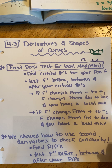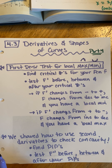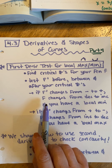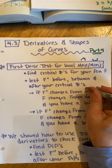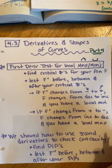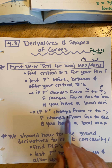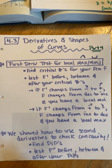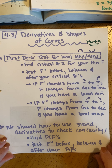We draw a number line and see how the derivative behaves before, between, and after our critical numbers. If the derivative changes from negative to positive at a critical number, then the original function changes from decreasing to increasing and we'll have a local min. If the derivative changes from positive to negative, then the original function changes from increasing to decreasing and we'll have a local max. If the derivative does not change sign, then that critical number is neither a local max nor a min.